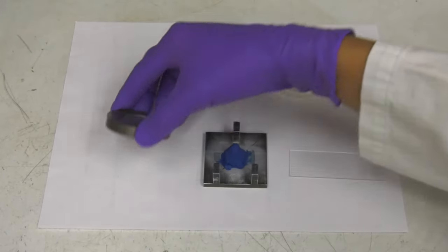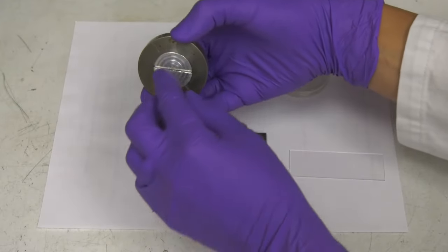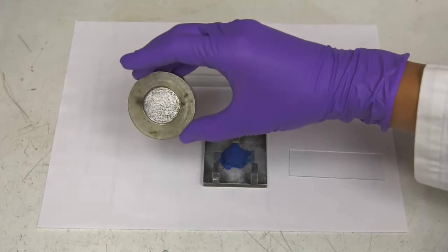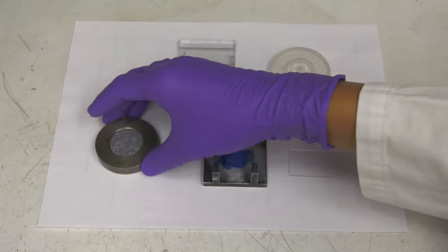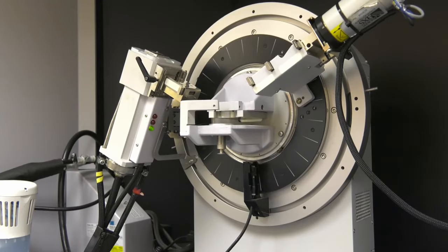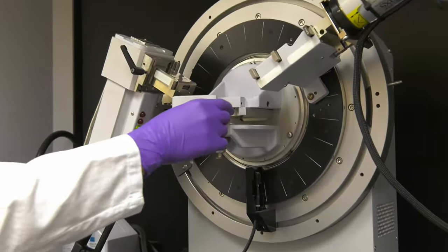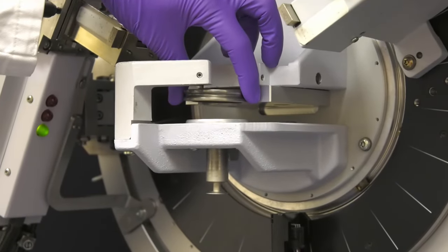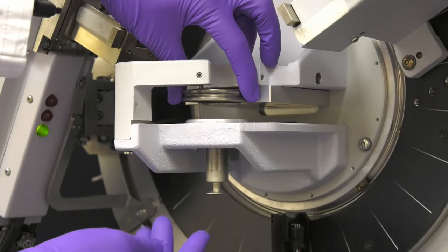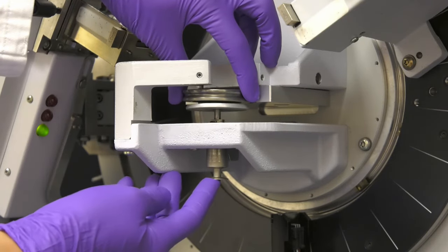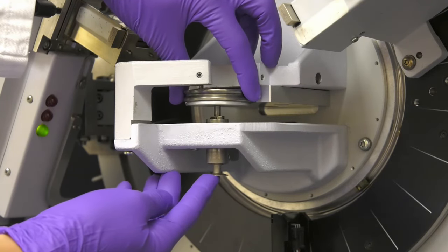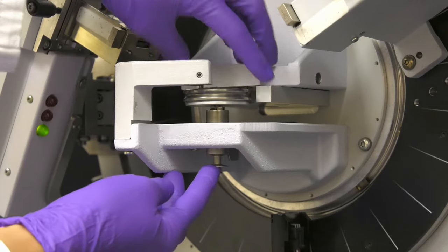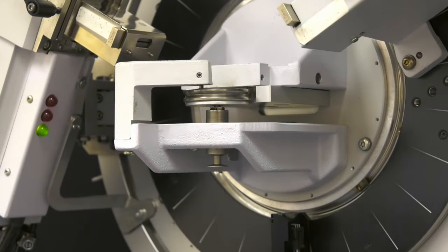This sample holder has an adjustable stage to change the height of the sample. After loading a sample, the sample holder is placed onto the base of the sample stage fixture. The sample holder is lifted up from above so that its top surface is flush with the top of the sample stage. Then, the sample stage fixture is gently pressed up, locking the sample holder into position.